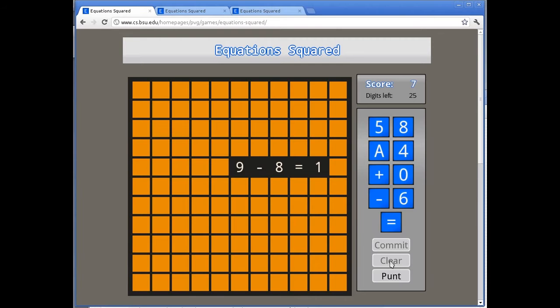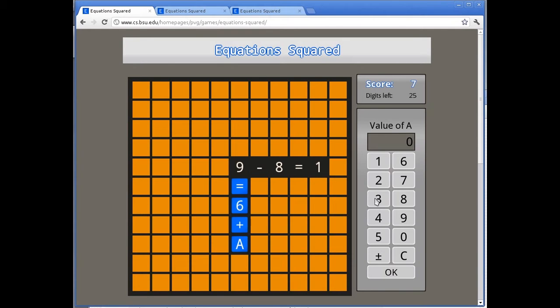Notice that in my current hand of tiles, I have an A. This is a variable. I can use this within an equation too. And when I do so, I have to give it a value that makes it true. For example, 9 equals 6 plus A. This is only true if A has the value of 3.